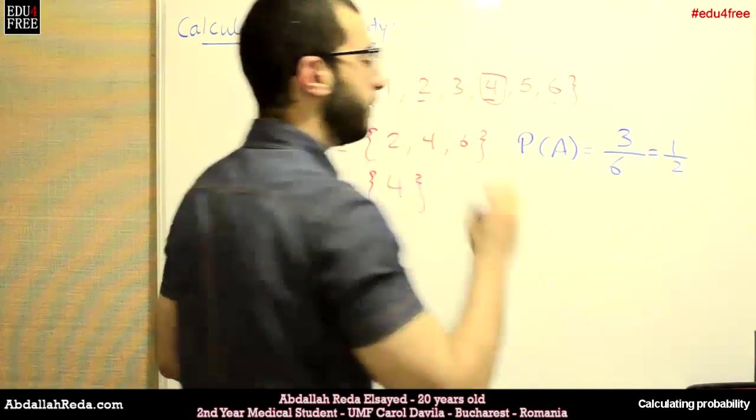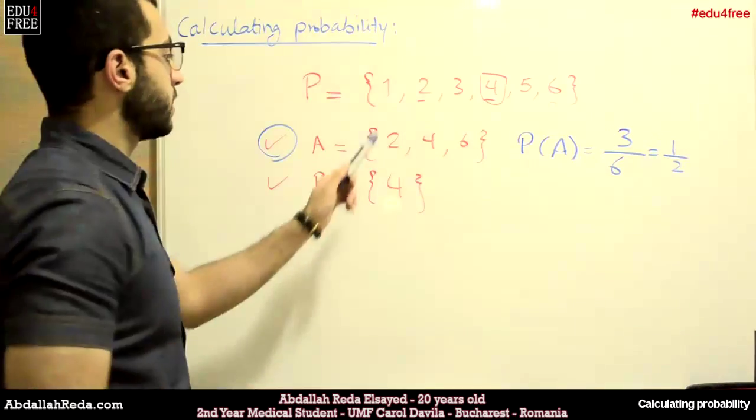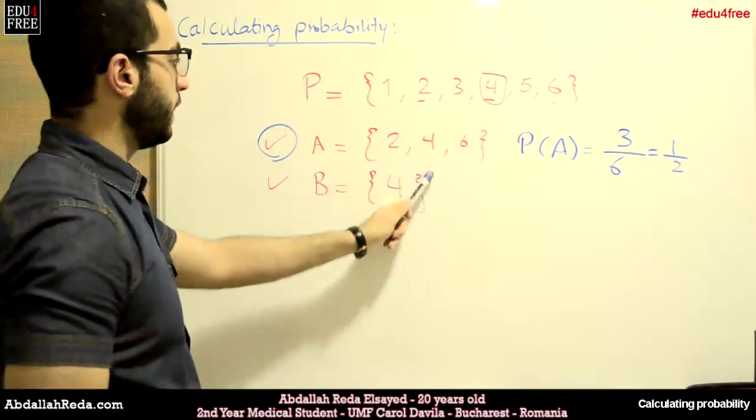This means that 50% of the time this event can occur, because it represents 50% of the probabilities, 3 out of 6.